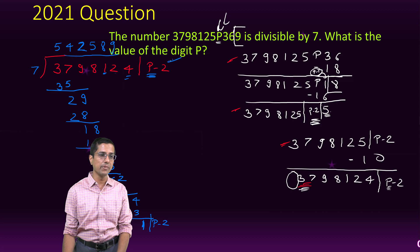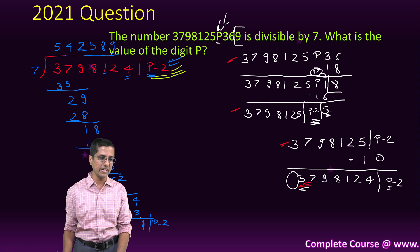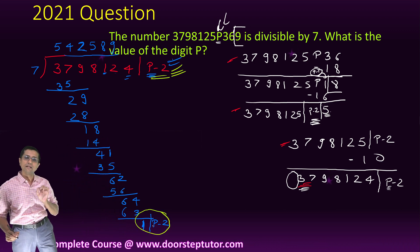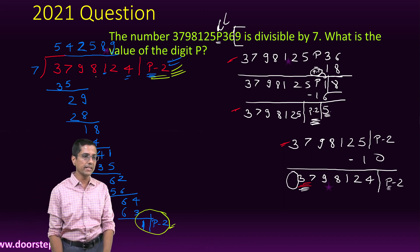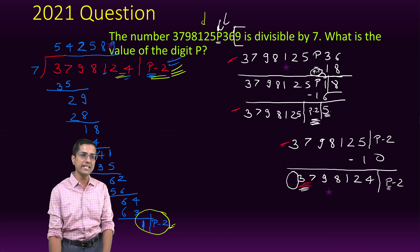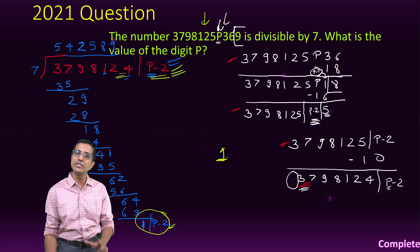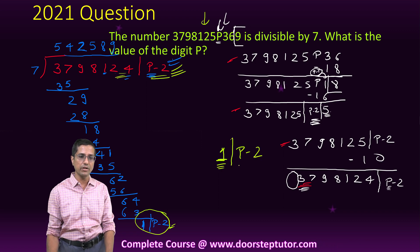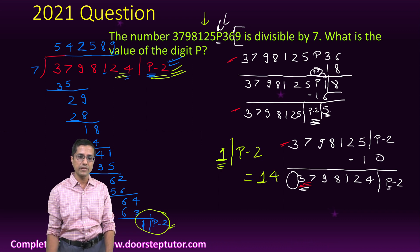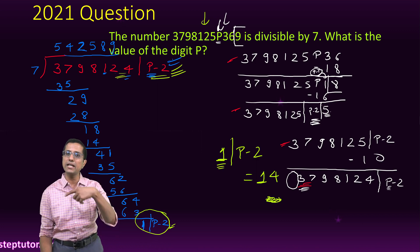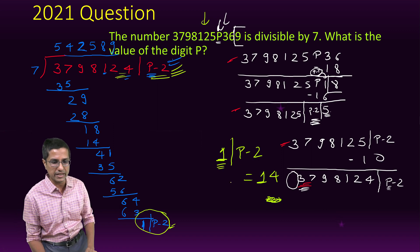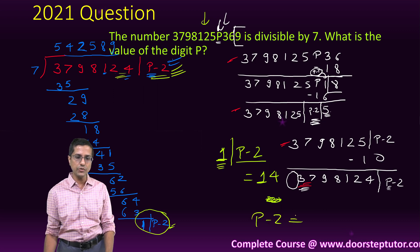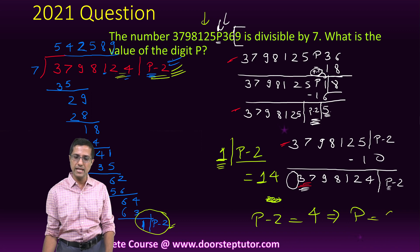In order for this number to be divisible by 7, this 1 and in the last digit there is p minus 2, this has to be divisible by 7. Because if this number is divisible by 7, this entire number is divisible by 7. What is the number which is divisible by 7 and has 1 in the tens place? There is only one such number and that is equal to 14. This essentially means that my p minus 2 has to be equal to 4, which means that my p is equal to 6.